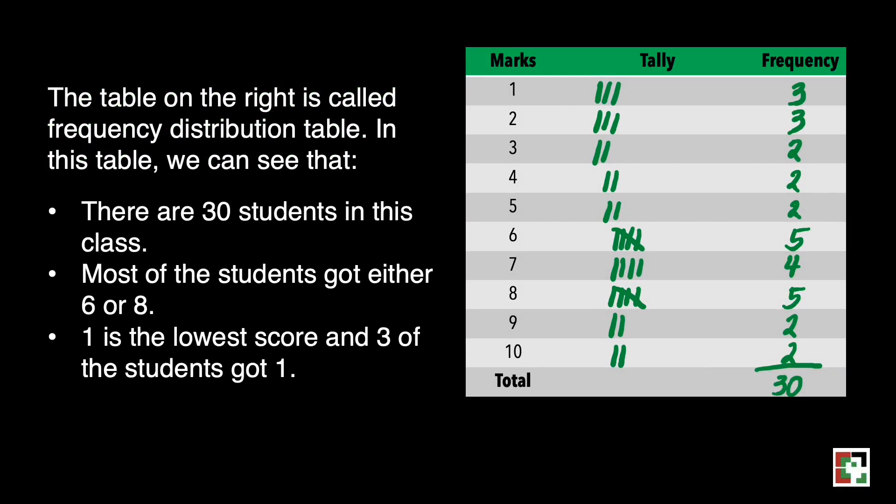The table on the right is called the frequency distribution table. In this table, we can see that there are 30 students in this class. Most of the students got either 6 or 8, and 1 is the lowest score, and 3 of the students got 1.